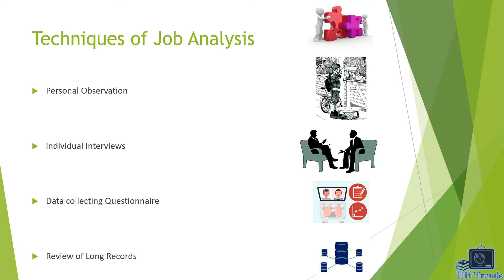Now we are going to discuss the techniques of job analysis. The first one is personal observation. In this scenario, a human resource manager observes employees who are actually doing the job. He looks out for the materials and equipment used, takes notes of the working conditions and possible hazards, and tries to appreciate all that the work involves. Observation could be done directly by the HR manager or indirectly through the employees' supervisors, or by external observers specially selected to watch employees performing their job.